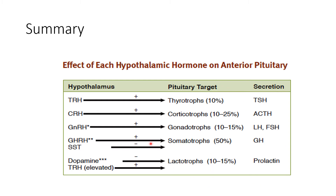These are the hypothalamic tropic hormones, and these are the tropic hormones released by different types of cells in the pituitary gland. These are the hypothalamic neurons and these are the anterior pituitary hormones.